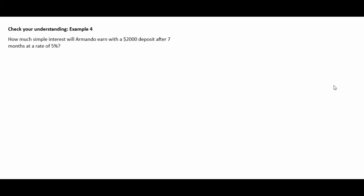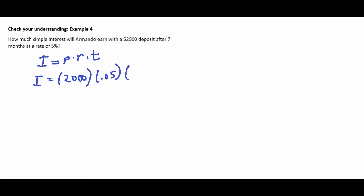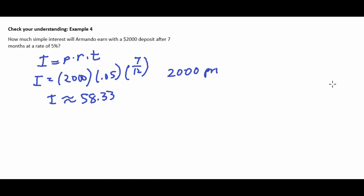Example four: How much simple interest will Armando earn with a $2,000 deposit after seven months at 5%? Using I = P × R × T, but time is seven months, so T = 7/12 of a year. I = 2000 × 0.05 × (7/12) ≈ $58.33. His total after seven months would be $2,000 + $58.33 = $2,058.33.